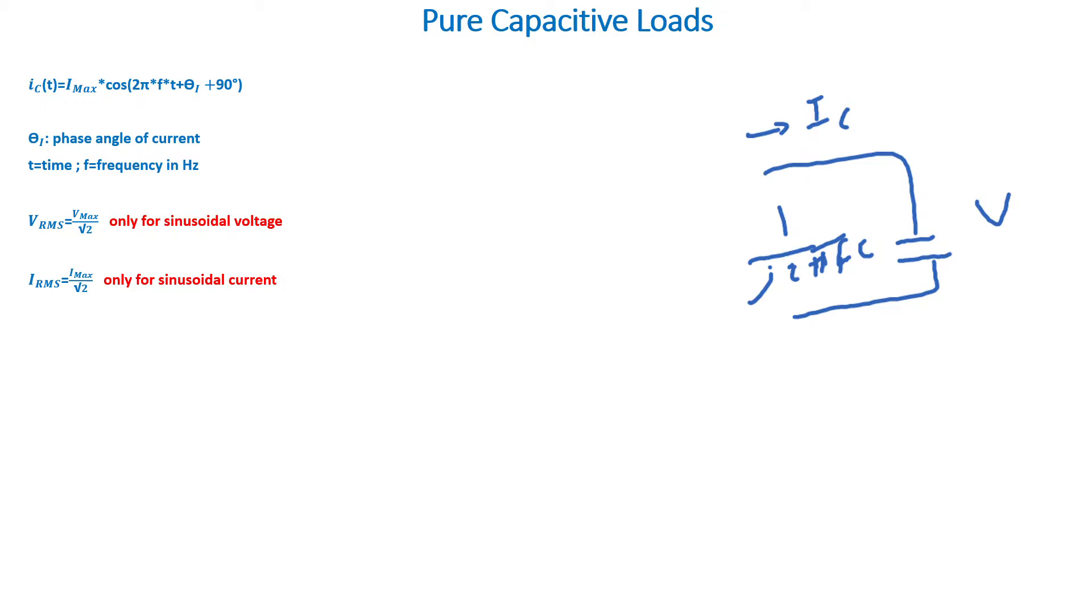The RMS value of the current is equal to the peak value of the current divided by the square root of 2, and this is only valid for sinusoidal currents.